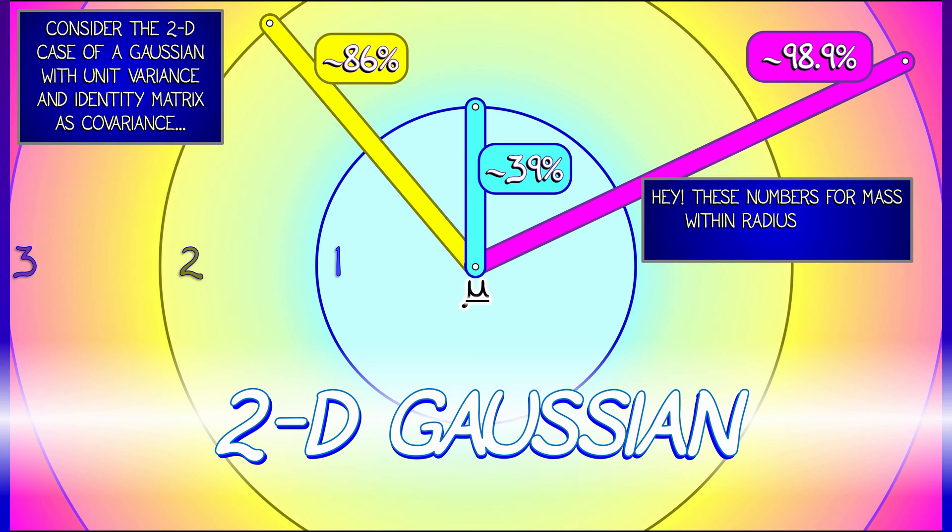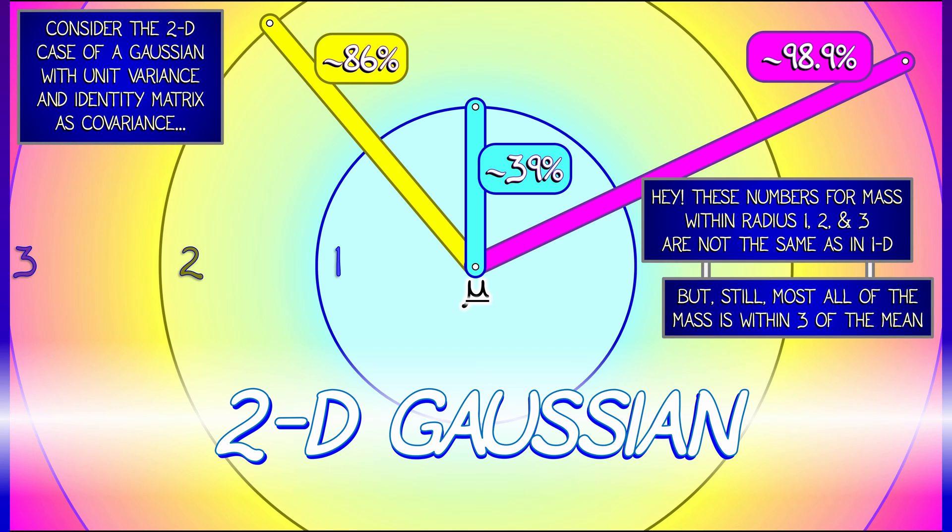These numbers are not the same. These are different. Now, it's not too different, right? Still, almost everything is within three standard deviations of the mean. So I feel pretty good about that, right? 98.9%. There we go. We're all good.